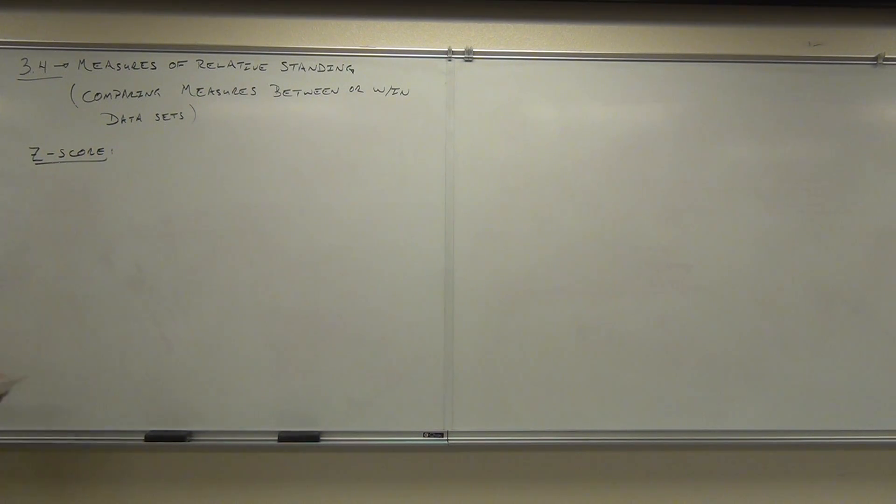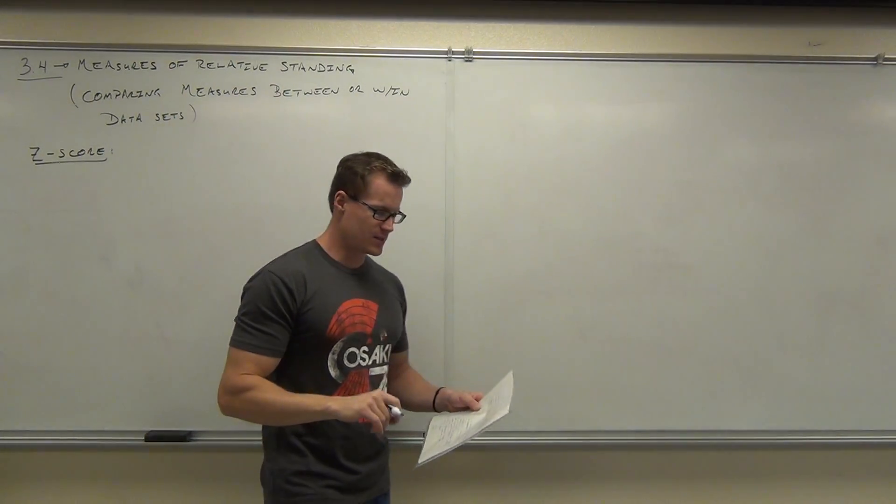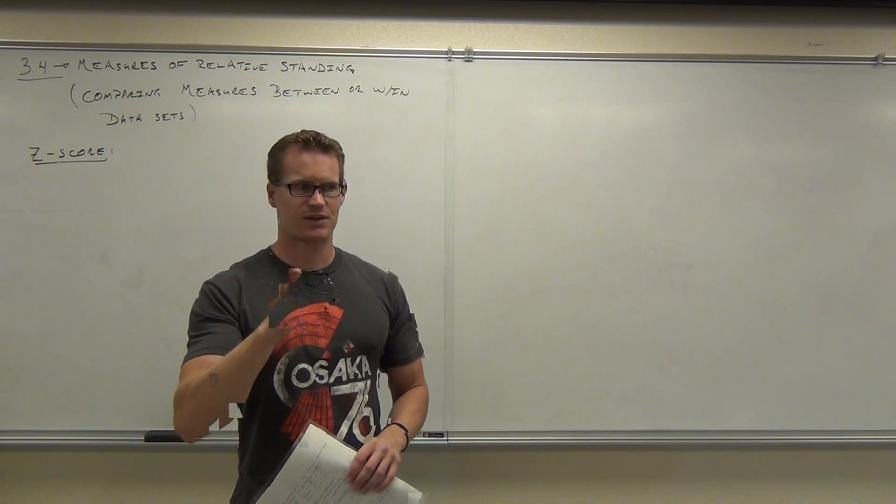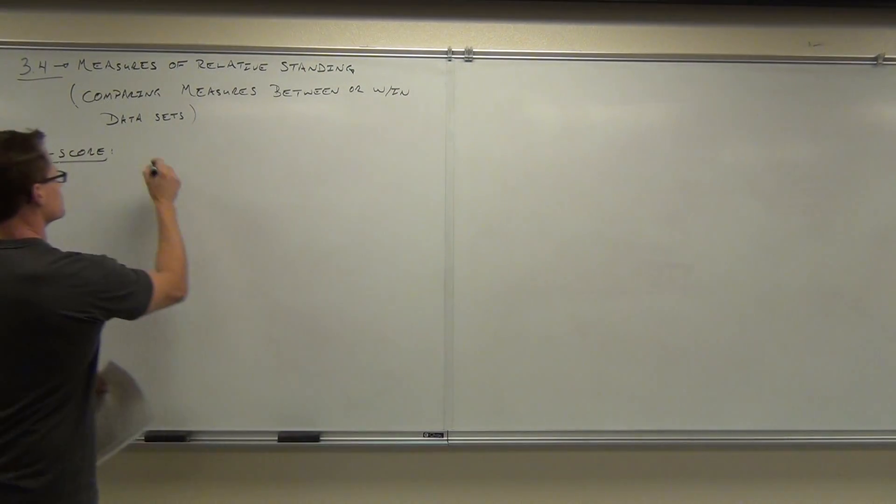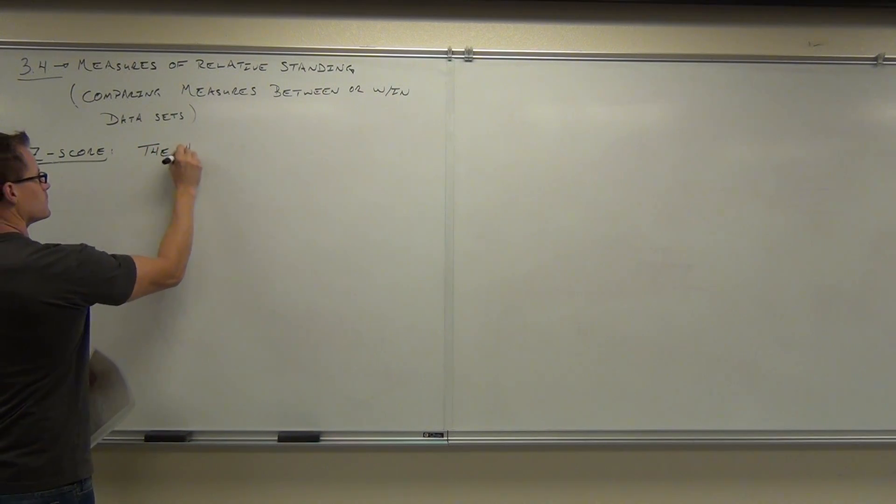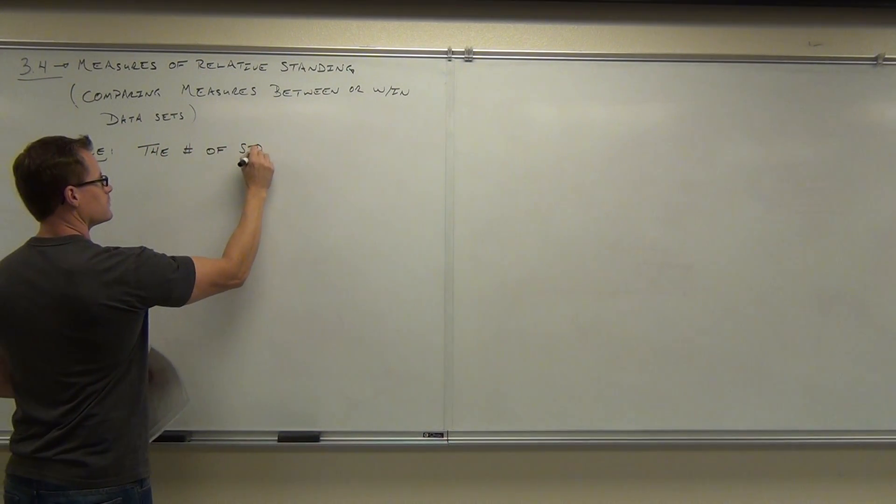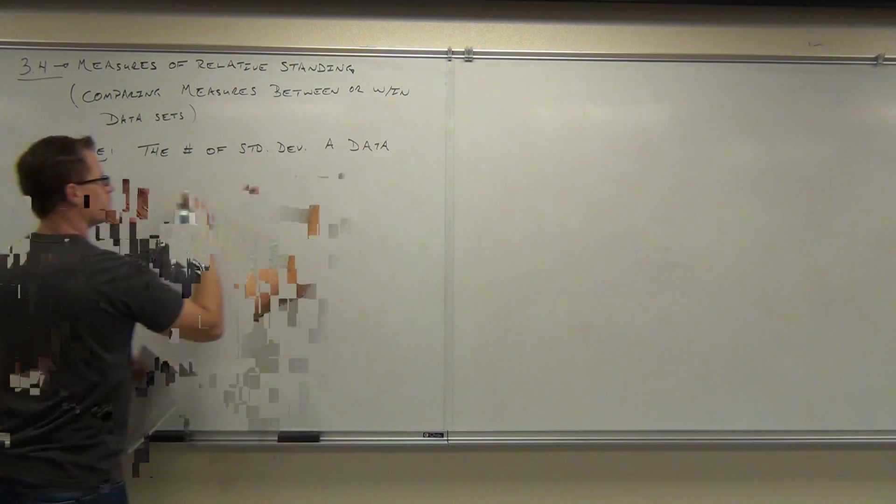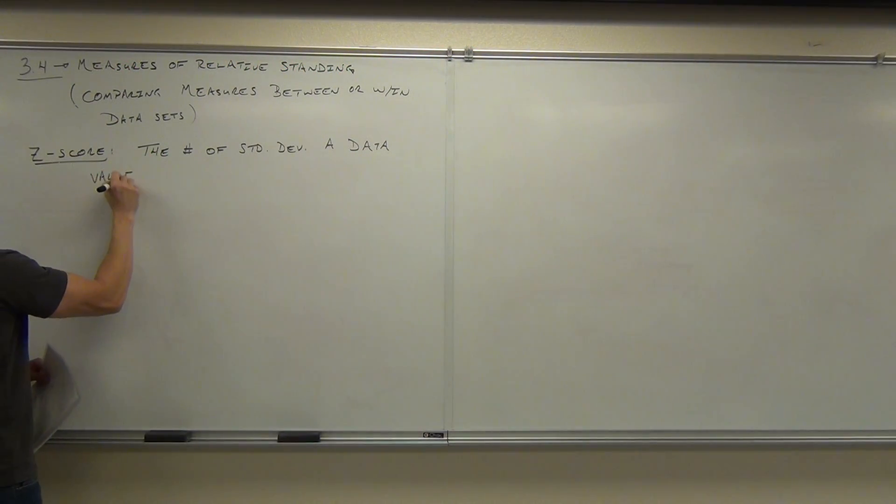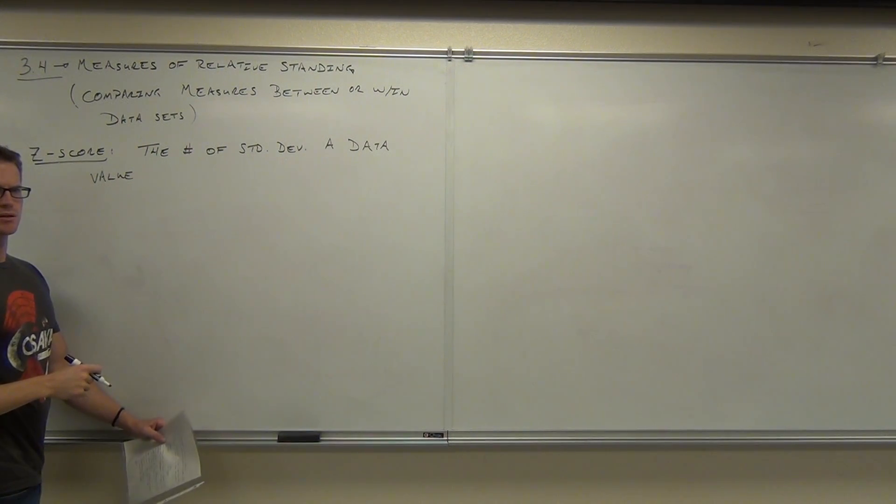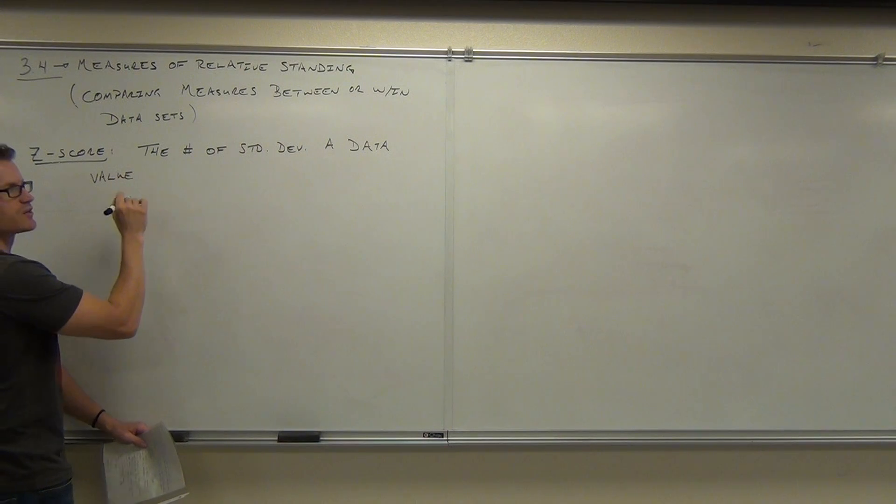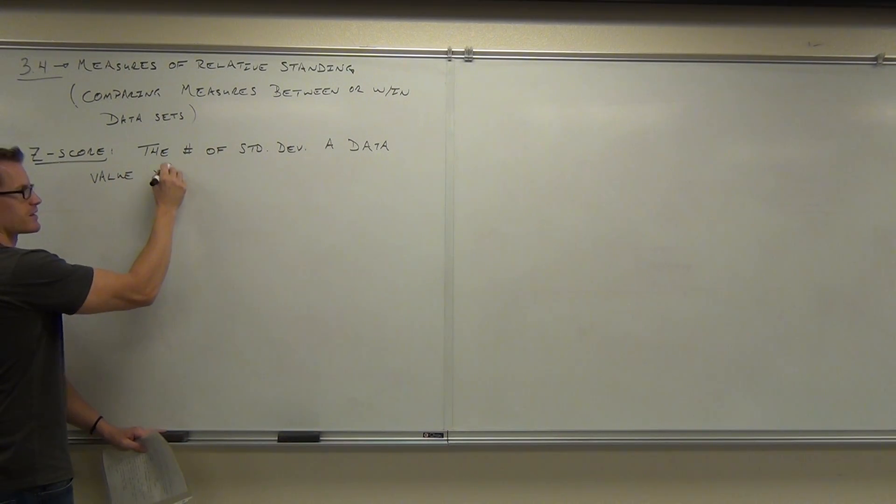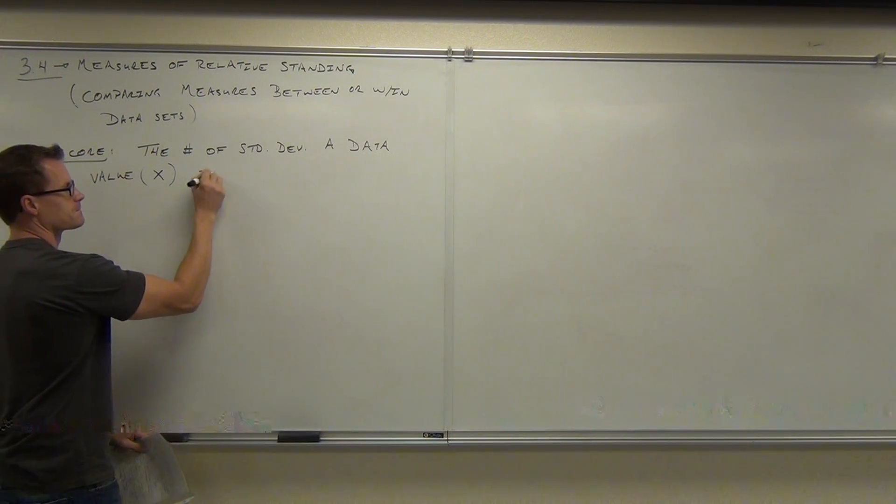The z-score is the number of standard deviations that a value, a specific data value, is away from the mean. By the way, what letter do we use to represent our data values in this class? x is. So the number of standard deviations a data value, that's our x's here, is away from the mean.